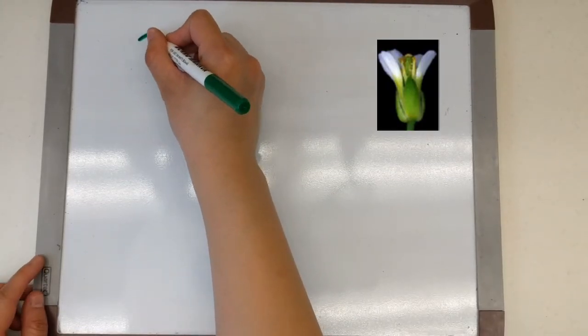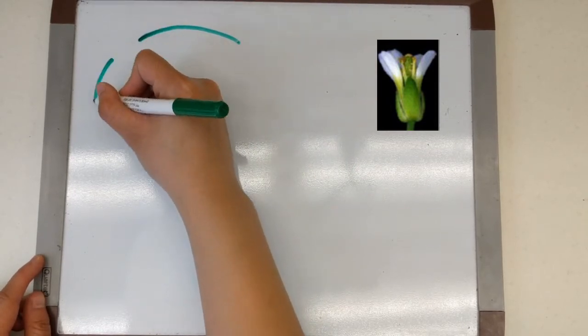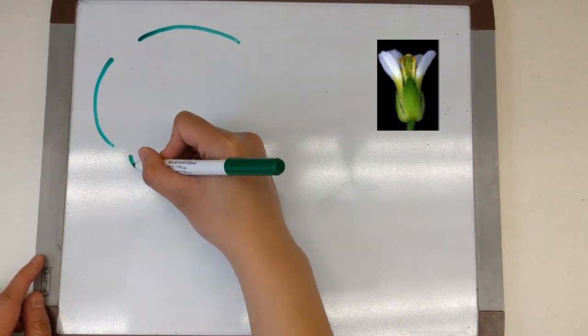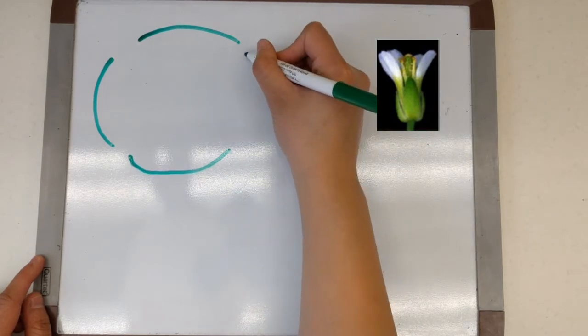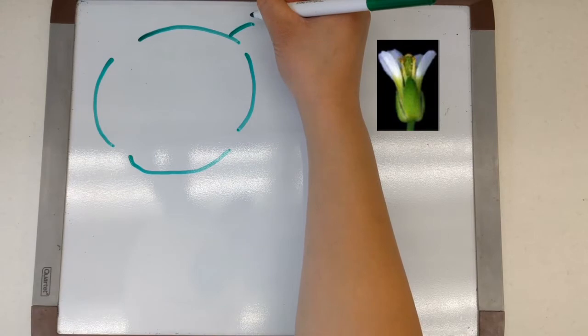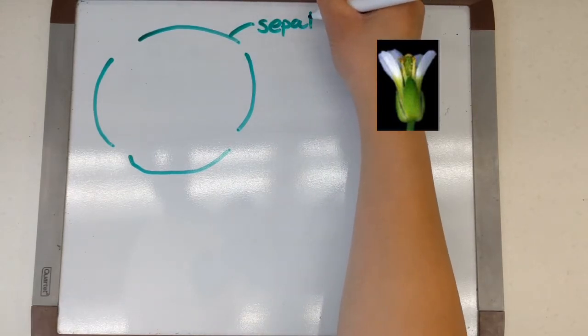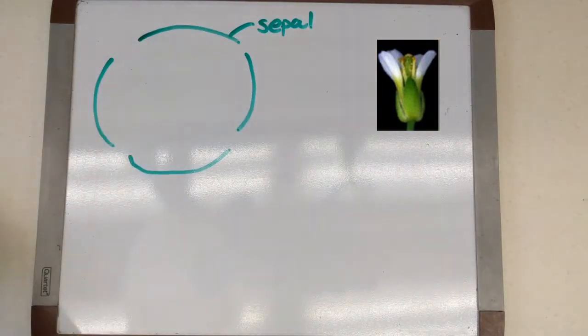So first we'll take a look at an overhead view of an Arabidopsis thaliana flower. That is of course a very commonly studied model plant. This will be the wild type version and will show the four major floral organs and their relative positions.